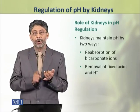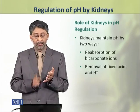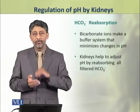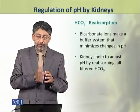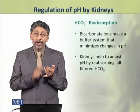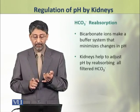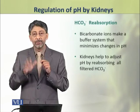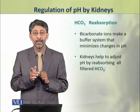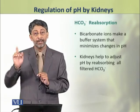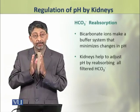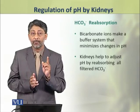Number one, by reabsorbing bicarbonate ions and by removing the fixed acids and hydrogen ions. First we shall discuss in detail the mechanism of reabsorption of bicarbonate ions in the kidneys. Bicarbonate ions actually make a buffer system with carbon dioxide that minimizes changes in pH. Kidneys help to adjust pH by reabsorbing all of the bicarbonate ions in the glomerular filtrate.